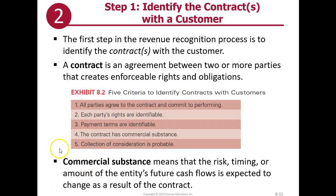There are five criteria to identify contracts. Number one, all parties agree to the contract and commit to performing. Number two, each party's rights are identifiable. Number three, payment terms are identifiable. Number four, the contract has commercial substance. And number five, the collection of the consideration is probable.